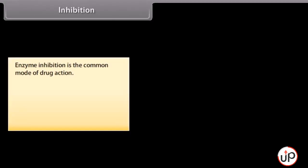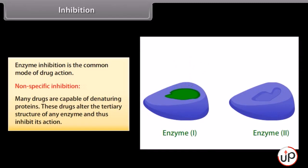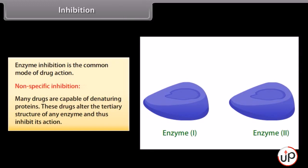Inhibition. Enzyme inhibition is the common mode of drug action. Non-specific inhibition: many drugs are capable of denaturing proteins — these drugs alter the tertiary structure of an enzyme and thus inhibit its action. For example, heavy metal salts, alcohol, formaldehyde and phenol inhibit enzymes non-specifically.